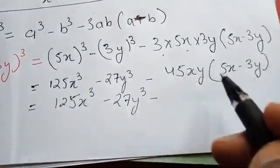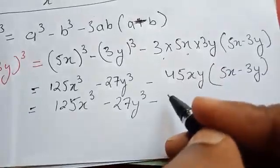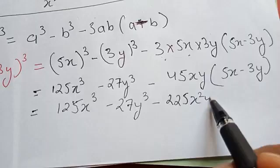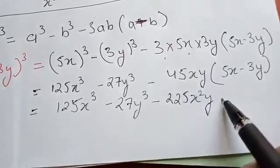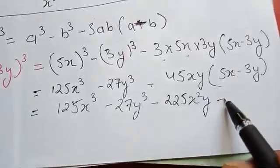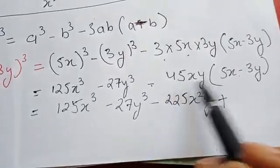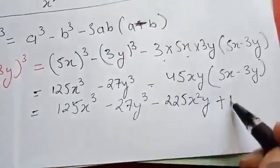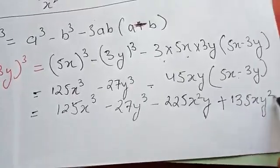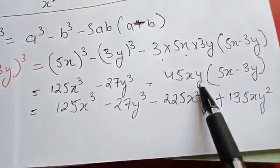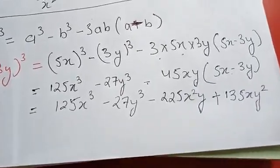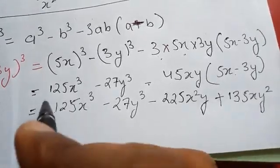Expanding further: 45 × 5 = 225, giving −225x²y. Then minus times minus becomes plus, and 45 × 3 = 135, giving +135xy². The final answer is 125x³ − 27y³ − 225x²y + 135xy².